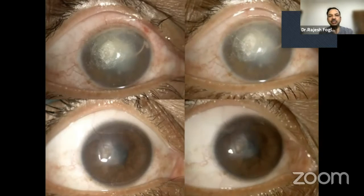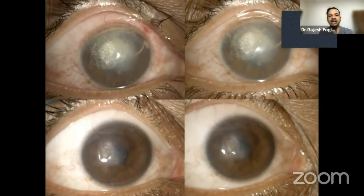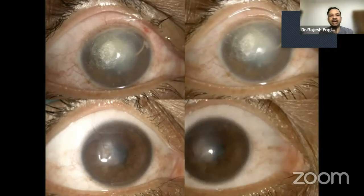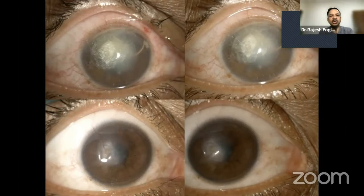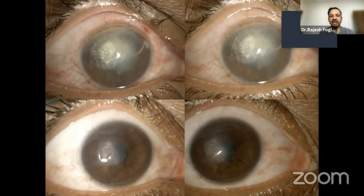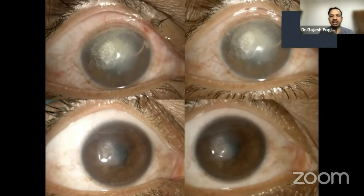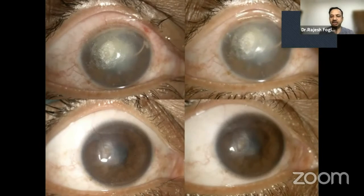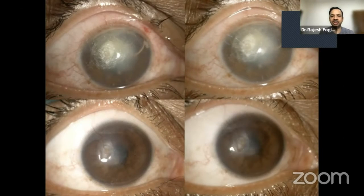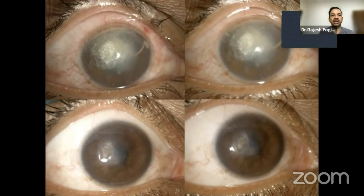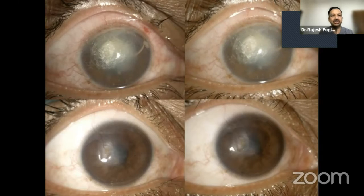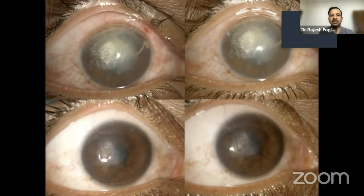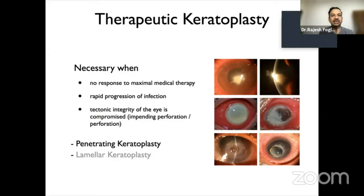In the post-operative period, there is healing. Glue does bring in some vascularization, as you can see in the post-operative patient. This patient went on to have 6/8 vision and did not require corneal surgery.